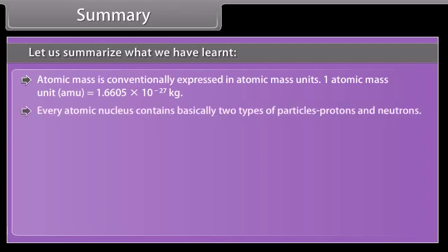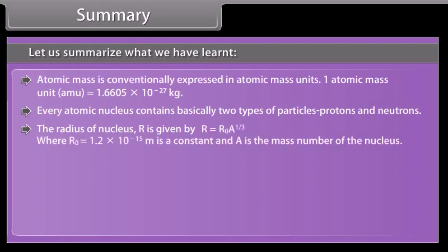Atomic nucleus contains basically two types of particles: protons and neutrons. The radius of nucleus R is given by R equals R not A to the power one-third, where R not is equal to 1.2 into 10 raised to the power minus 15 meters is a constant, and A is the mass number of the nucleus.